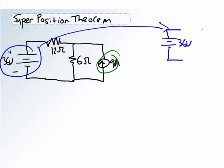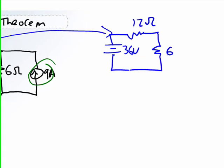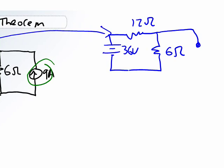We'll do the 36-volt source. We're going to redraw it using the 36-volt source. Again, it's 36 volts. Nothing happened to the 12-ohm resistor. 6-ohms is still there. But now when we get to the current source, we replace it with an open circuit.